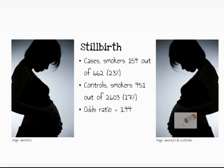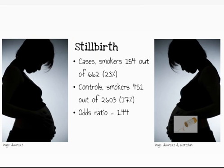As an example, we recently examined stillbirths in Brisbane. We found four controls for each stillbirth using babies who were born alive. All the data came from the same birth registry. Among the cases, there was a higher rate of smoking — 23% compared with 17% in the controls.